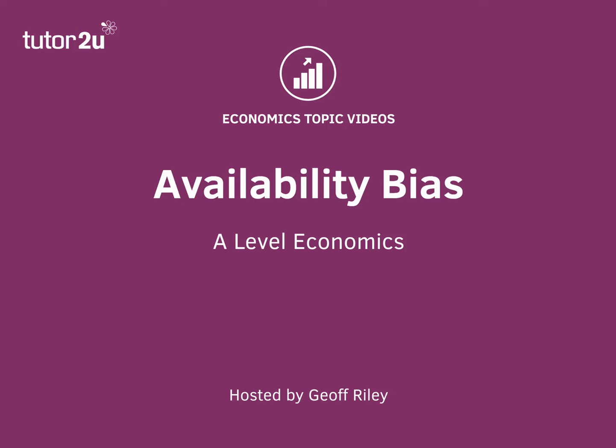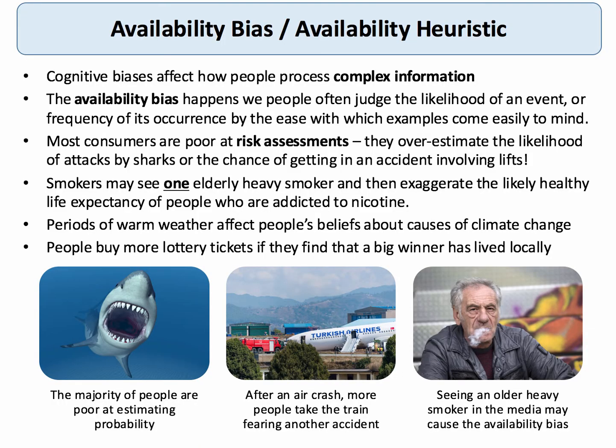Hi there. In this short video on behavioural economics, we're going to be focusing on the availability bias or the availability heuristic. There are numerous examples of cognitive bias which have been investigated by behavioural scientists, and this is quite a common one. Cognitive biases affect how people process what is often very complex information. So the availability bias or the availability heuristic is this.